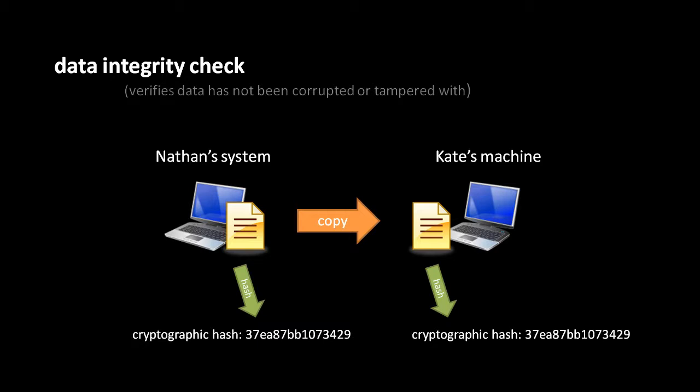Such a thing can happen. It's not as likely as the file itself getting corrupted, because the hash is generally much smaller than the file, so there are fewer bits to get corrupted. And a false negative generally isn't as harmful as a false positive. The false negative means that Kate's going to erroneously tell Nathan that she needs him to resend the file, even though she already has the right file.